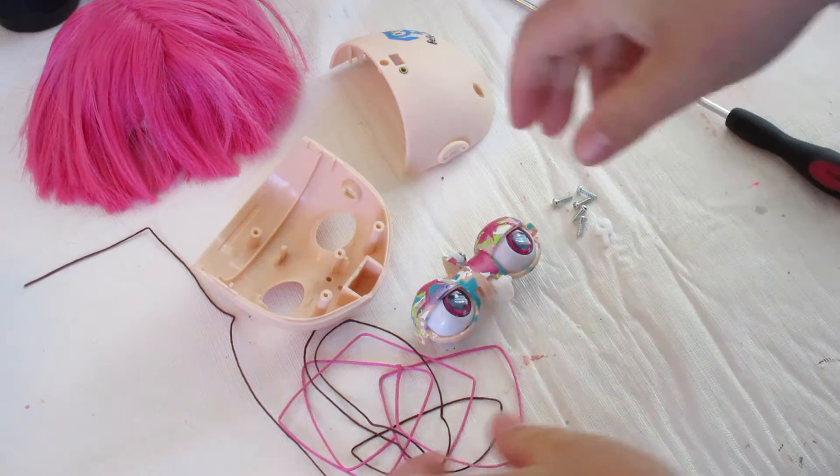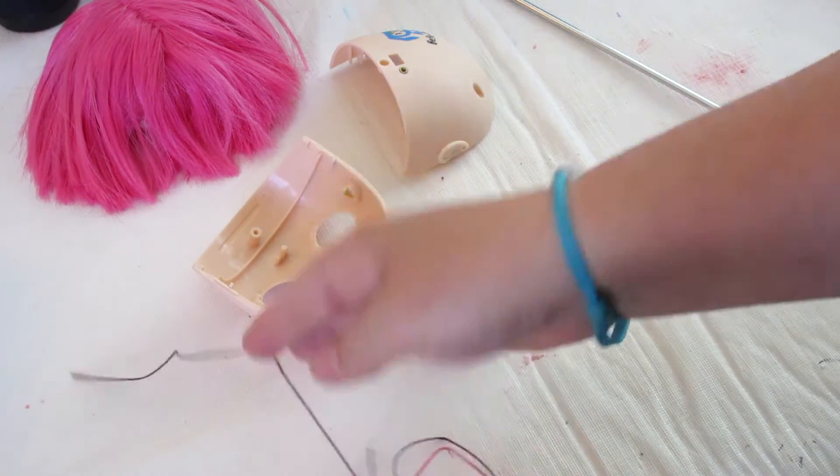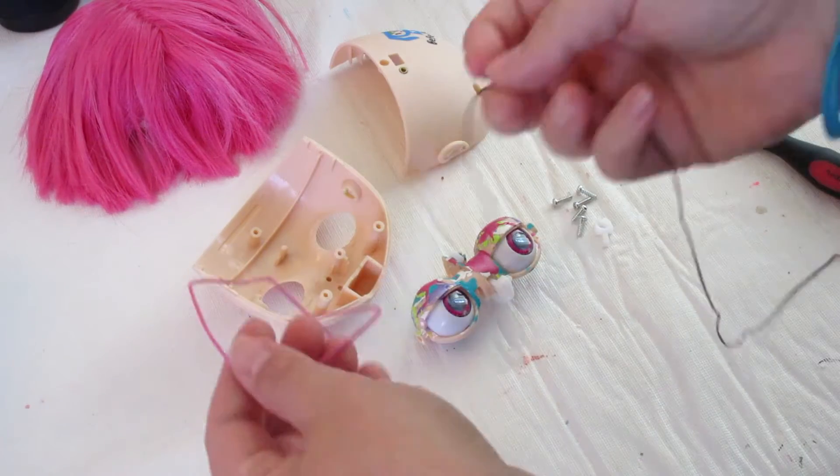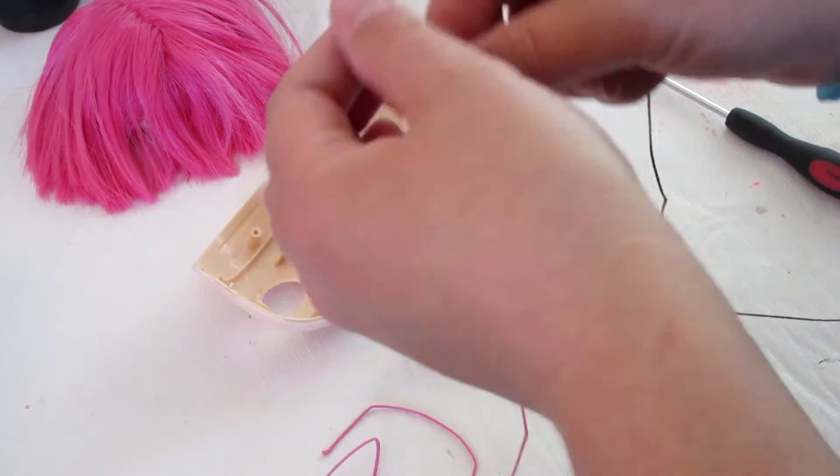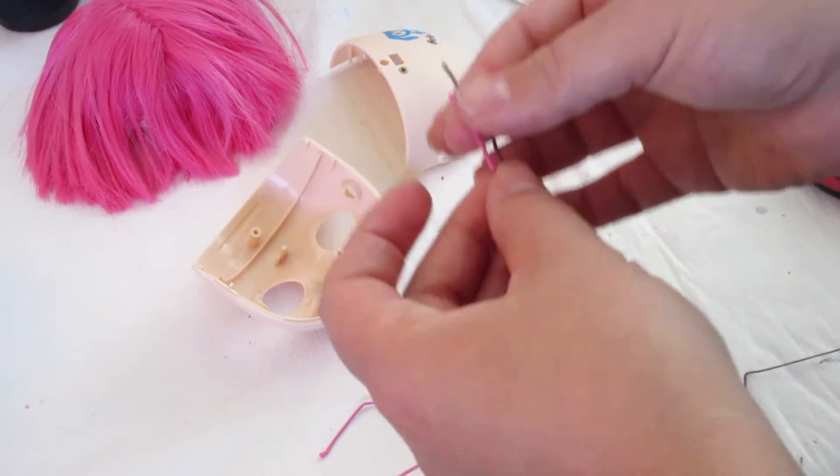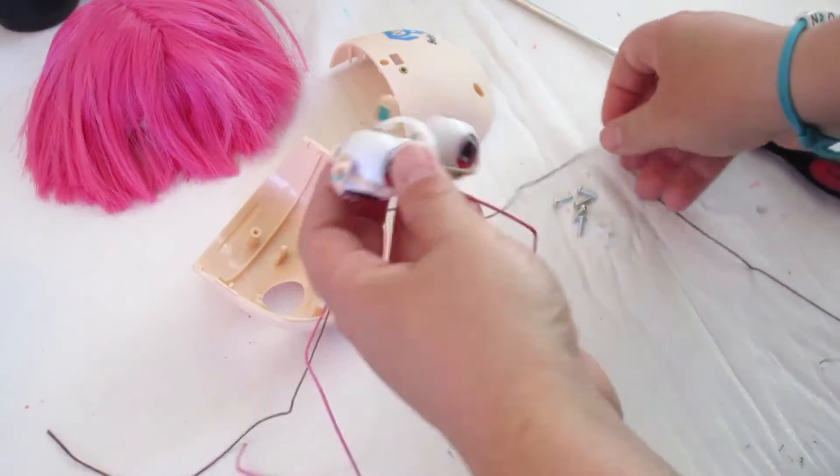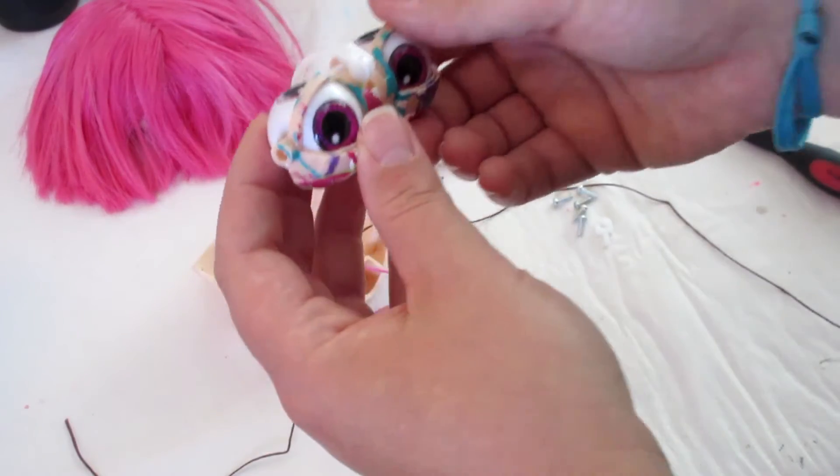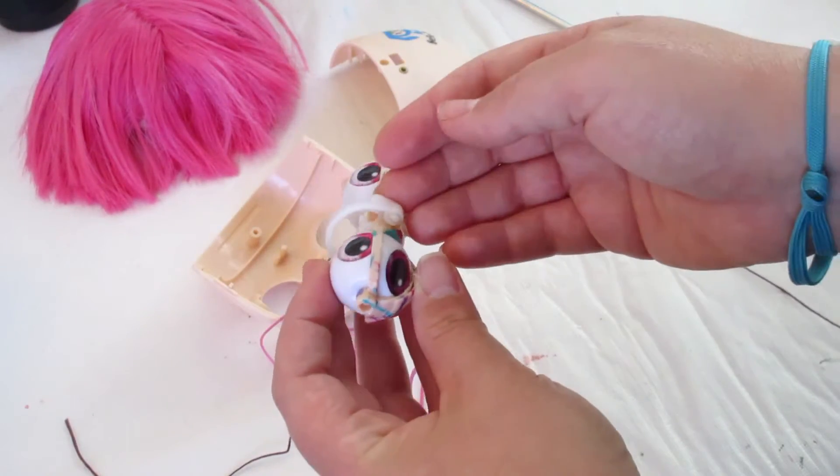What you need are two strings. This is the trickiest part - it's really hard to find good options of string that's thin enough, because one of the strings has to be threaded through this part of the eye mechanism.